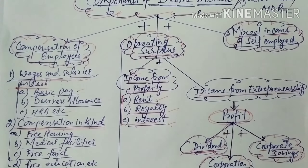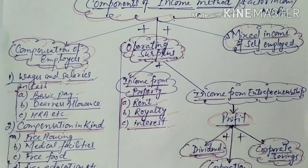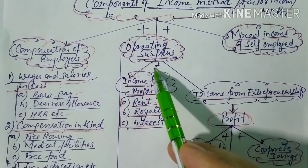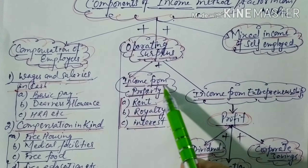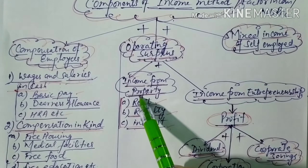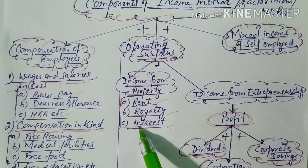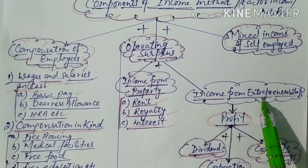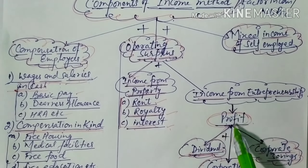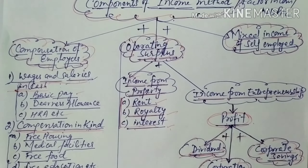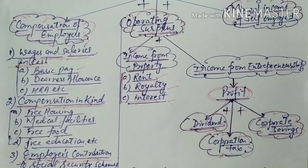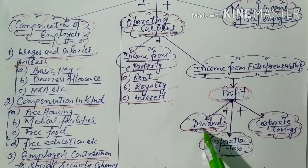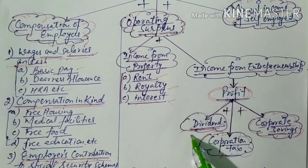The second component is operating surplus. Operating surplus has two further components. First is income from property, which includes rent, royalty, and interest. Second is income from entrepreneurship, which means profit. Profit itself has three parts: dividend — that is the part of profit distributed among shareholders.